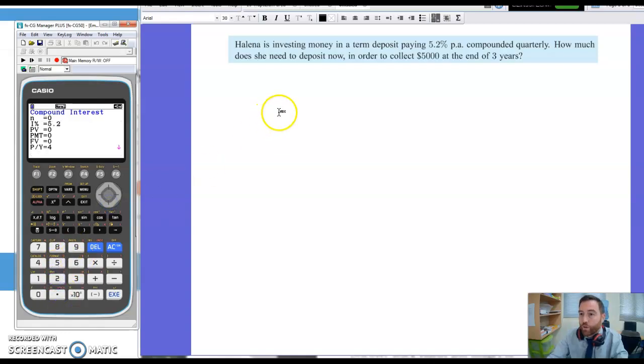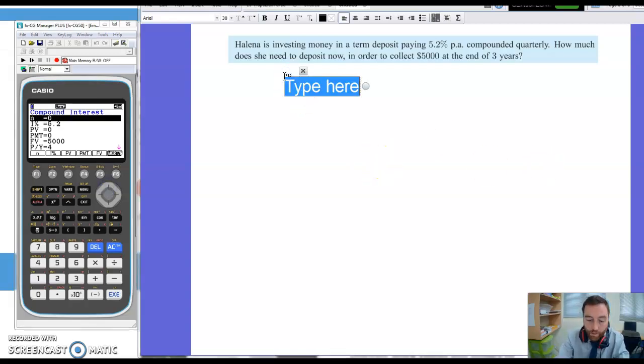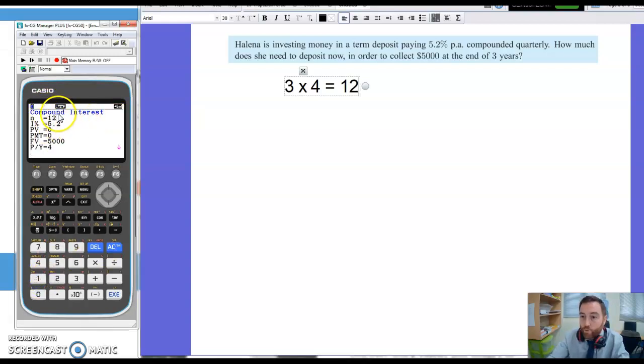She's going to collect $5,000 at the end. So that is the future value is going to be positive 5,000. And we've got three years of quarterly payments. Well, three years times four, that is 12 compounding periods. So N equals 12. And we want to know how much does she deposit now? What is my kind of present value? So let's work that one out.